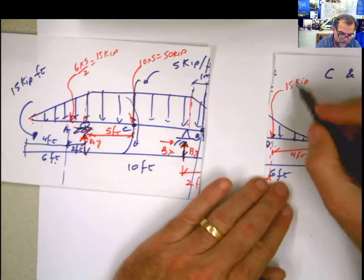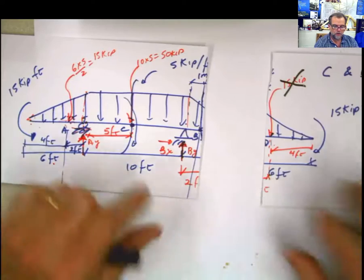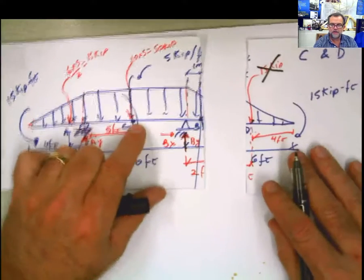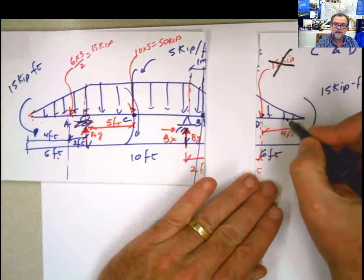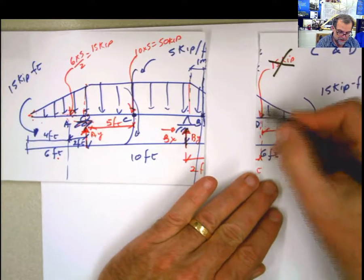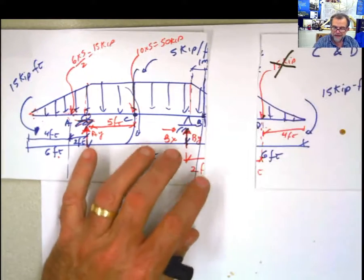Remember, this 15 kip force, that's a lie. That's something that we do only for calculating reactions, external reactions. But when I do the cut, this part of the beam carries a part of the triangular load as well as this other part of the beam. And that's what we have to do.